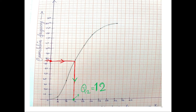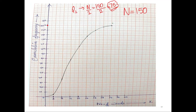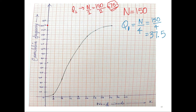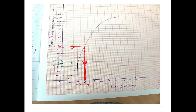Now let's see how to find the upper and lower quartile. To find Q1, we know it's the lower quartile — divide N by 4. So 150 divided by 4 gives you 37.5. Reminding you again, 37.5 is not your Q1. Go to your y-axis, mark 37.5 there, draw straight lines using your ruler, hit the S-shaped curve, and from there drop the line down. My Q1 is 8.